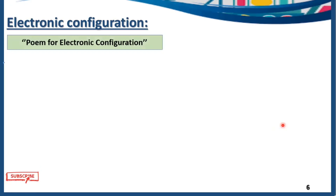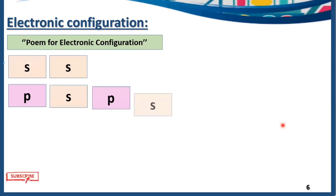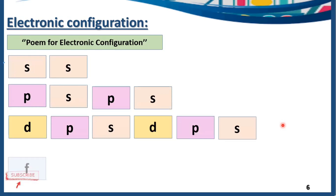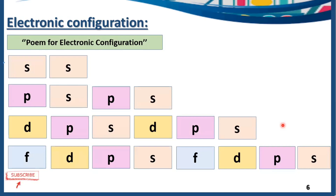Here is a trick to memorize the electronic configuration, because all the subshells are arranged according to their energy level. The mnemonic is: School, School, Public School, Public School, Divisional Public School, Divisional Public School, Foundation Divisional Public School, Foundation Divisional Public School. Using this poem, you can memorize the order of subshells by increasing energy level.